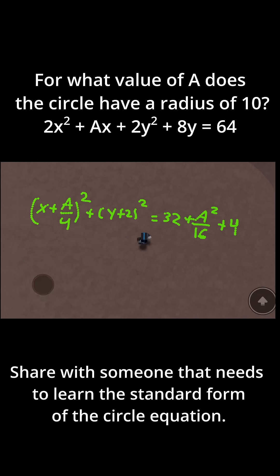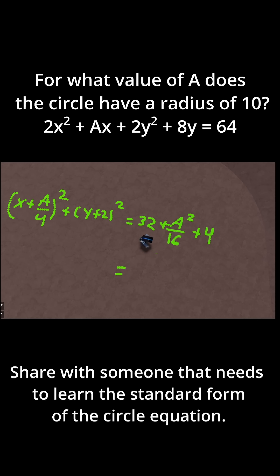Okay, now how can this help us get the value of a? Well, remember, the whole thing in a circle equation in standard form is equal to r². And you know r = 10. And therefore, r² is just 100. That means this whole side here is just equal to 100. So what I can do is set 32 + a²/16 + 4 equal to 100.